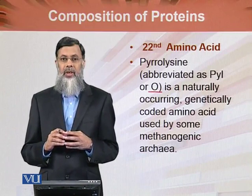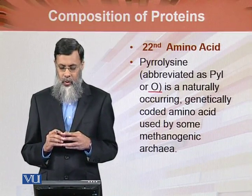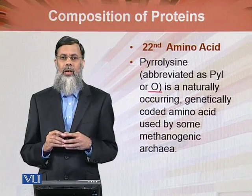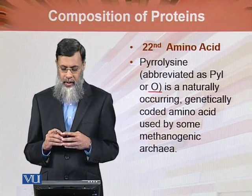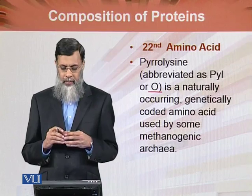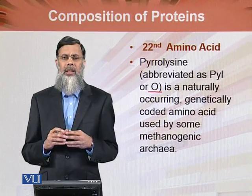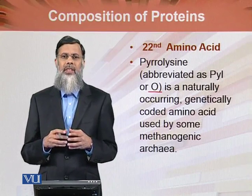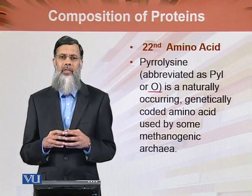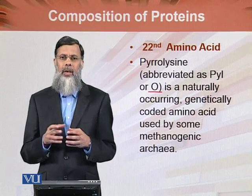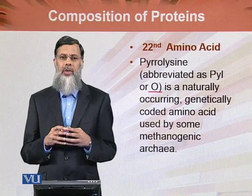Pyrrolysine is a naturally occurring and genetically coded amino acid, in contrast to selenocysteine which is not genetically encoded. It is used by some methanogenic archaea. These are the two non-standard or newly discovered amino acids — the 21st and 22nd — while the 20 standard amino acids form the main mass of proteins.